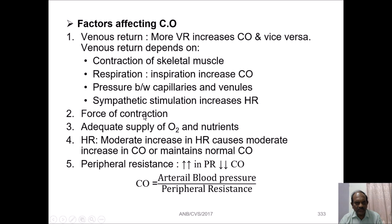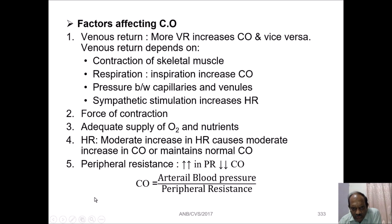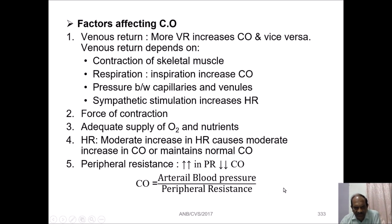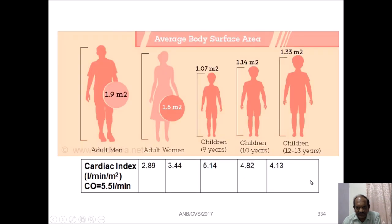Force of contraction also affects cardiac output. Adequate supply of oxygen and nutrients will also affect cardiac output. A moderate increase in heart rate causes a moderate increase in cardiac output or maintains normal cardiac output. Peripheral resistance also affects cardiac output — more peripheral resistance results in lesser cardiac output. Hence, cardiac output equals arterial blood pressure divided by peripheral resistance.